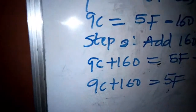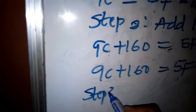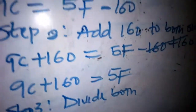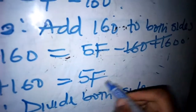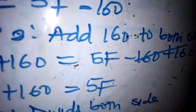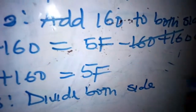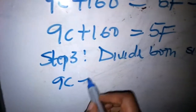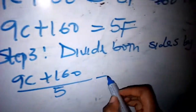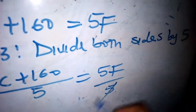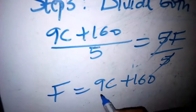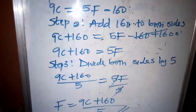Step three: divide both sides by the coefficient of F, which is 5. So we have 9C plus 160 over 5 equals 5F over 5. The 5s cancel, so we have F equals 9C plus 160 over 5. We have just made F the subject of the formula.